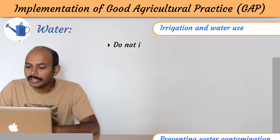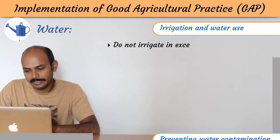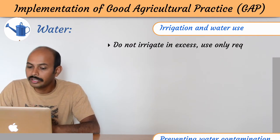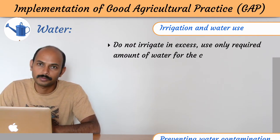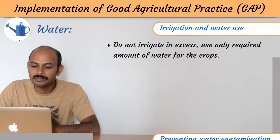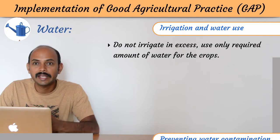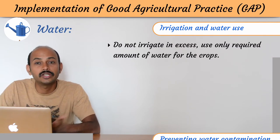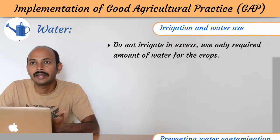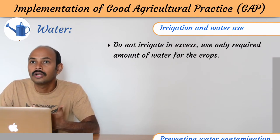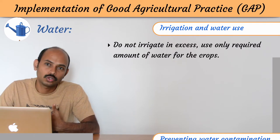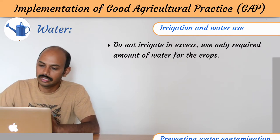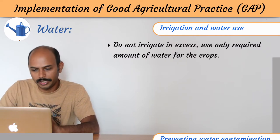Do not irrigate in excess — use only the required amount of water for the crops. Excess water is generally a waste and it also does a lot of harm to the soil, so this should be avoided.